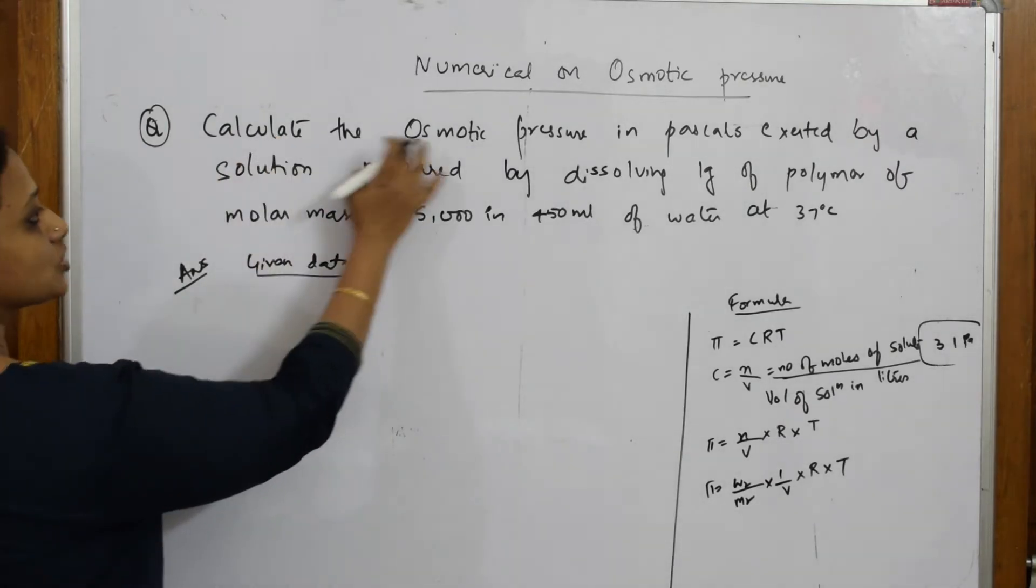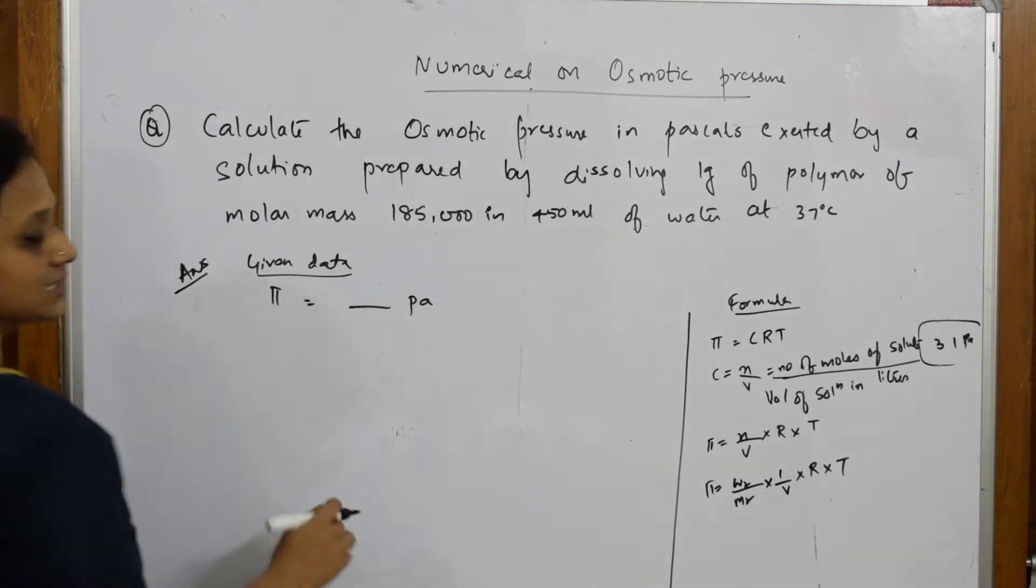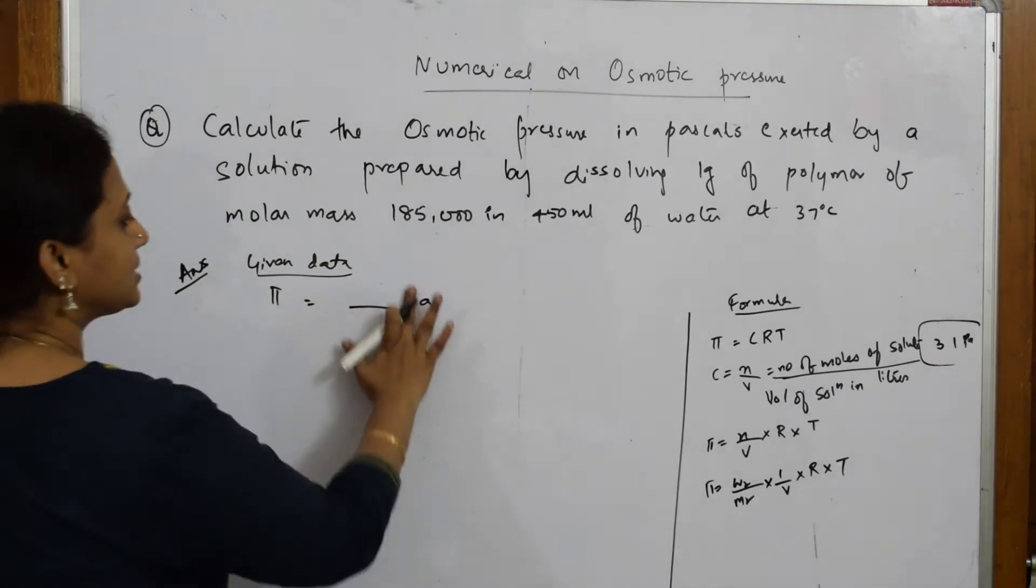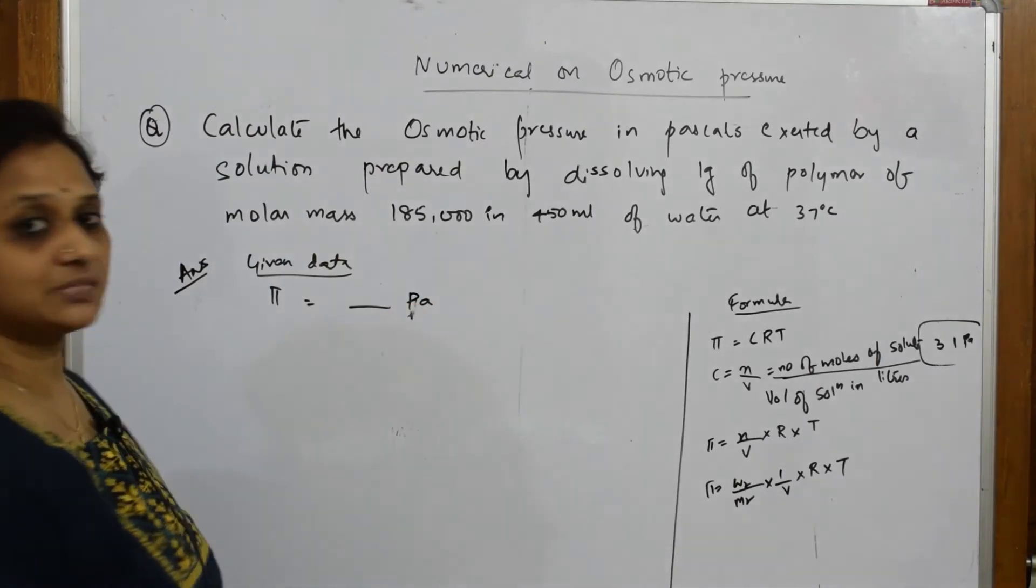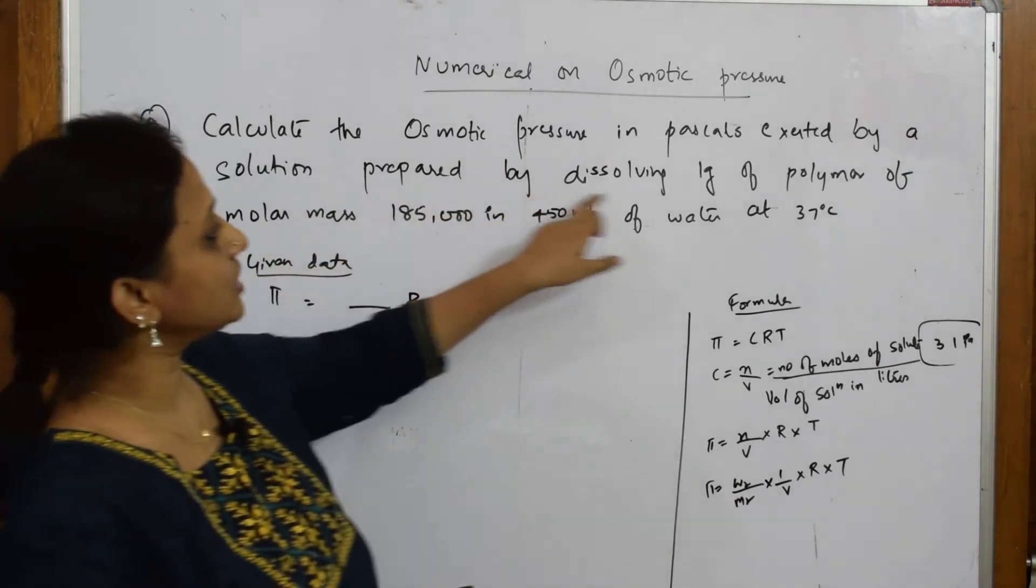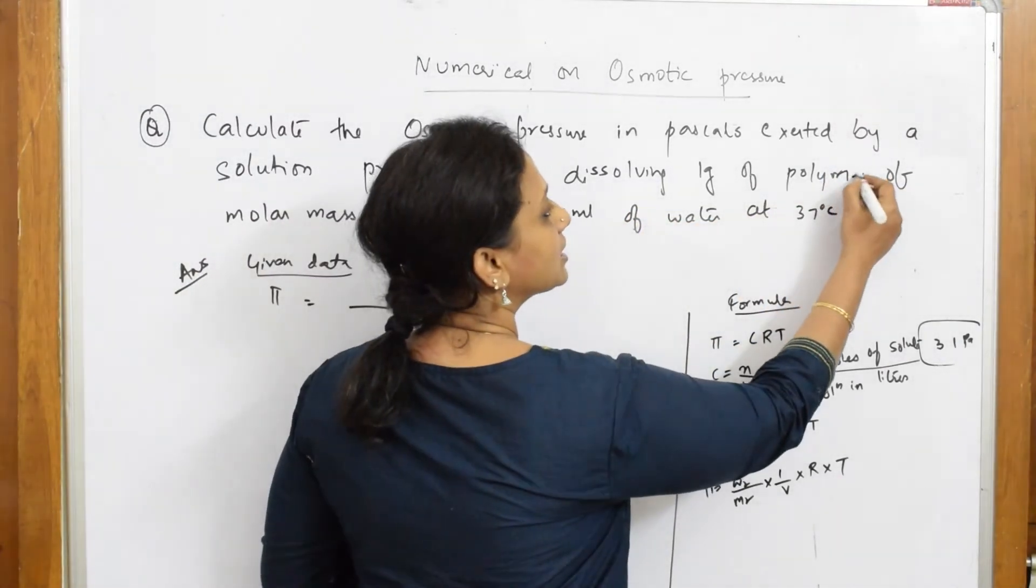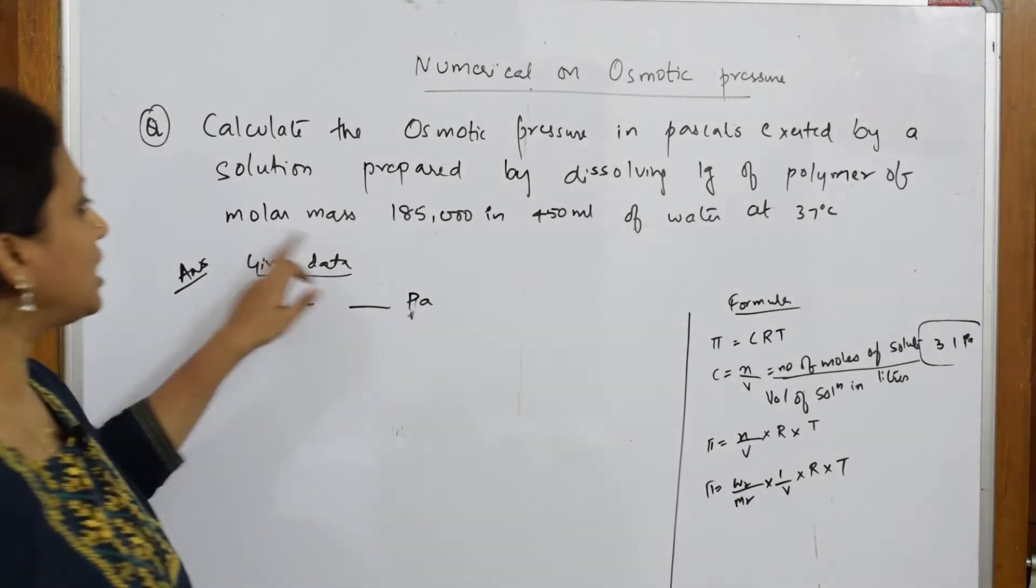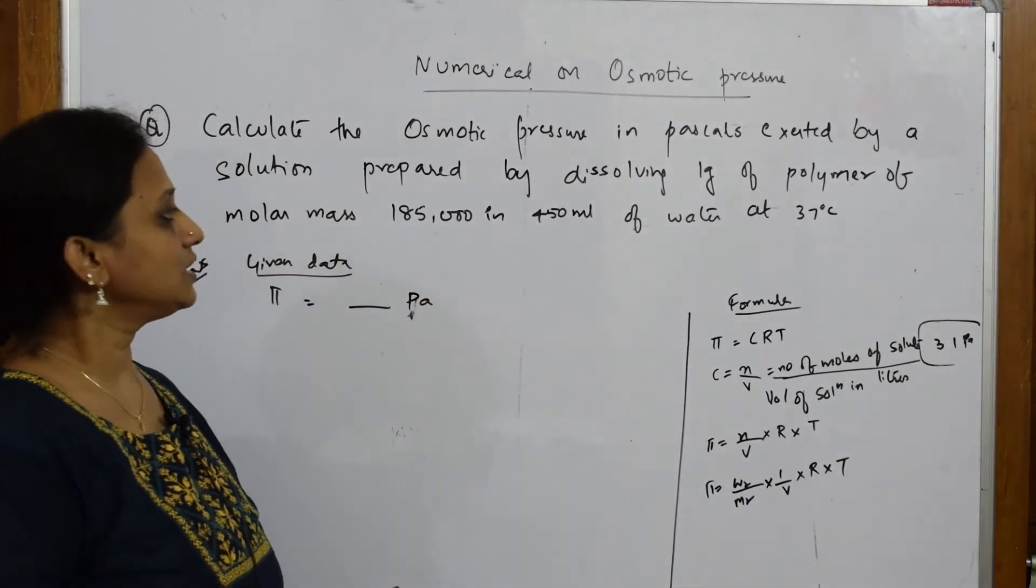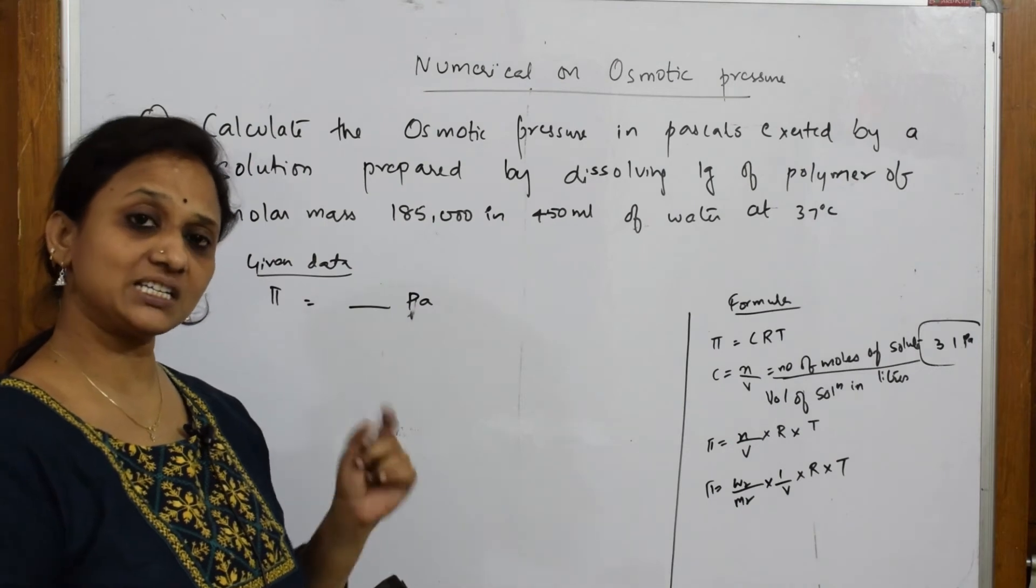Calculate the osmotic pressure in pascals. They want us to calculate osmotic pressure and the answer should be in pascal systems. Exerted by a solution prepared by dissolving 1 gram of polymer of molar mass 185,000. They have given me mass as well as molecular weight.